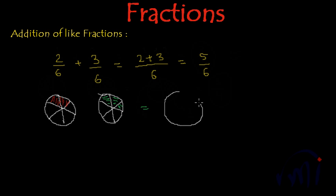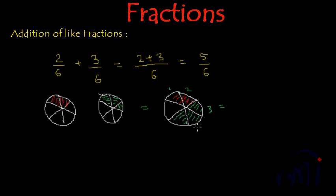And to represent 3 by 6 we have to shade 3 portions of this pizza. Now if we take one more pizza and try to assemble these portions, for the first fraction we have to shade 2 because the first fraction was 2 by 6, and for the second fraction we have to shade 3 portions because the second fraction is 3 by 6. So how many total shaded portions do we have? 1, 2, 3, 4, and 5 shaded portions out of total 6.